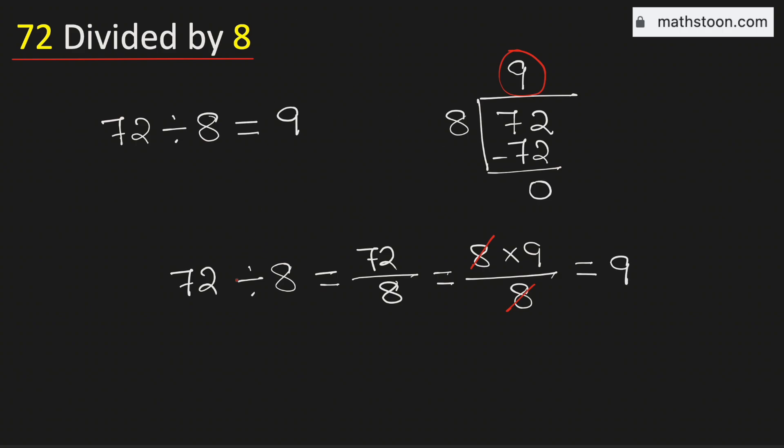Therefore 72 divided by 8 is equal to 9. And this is our final answer.